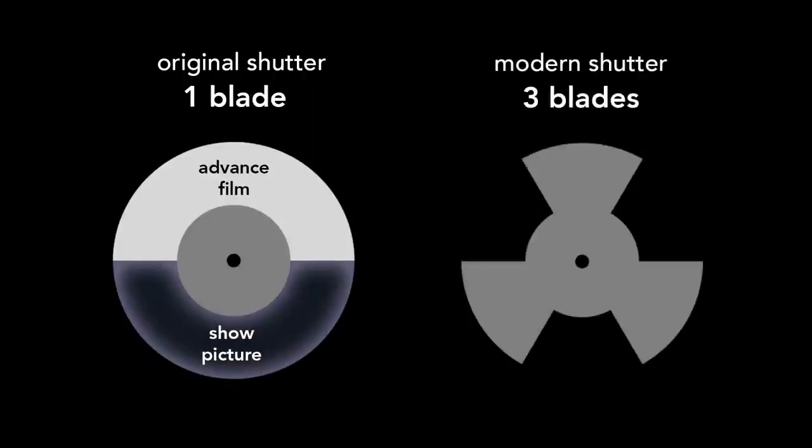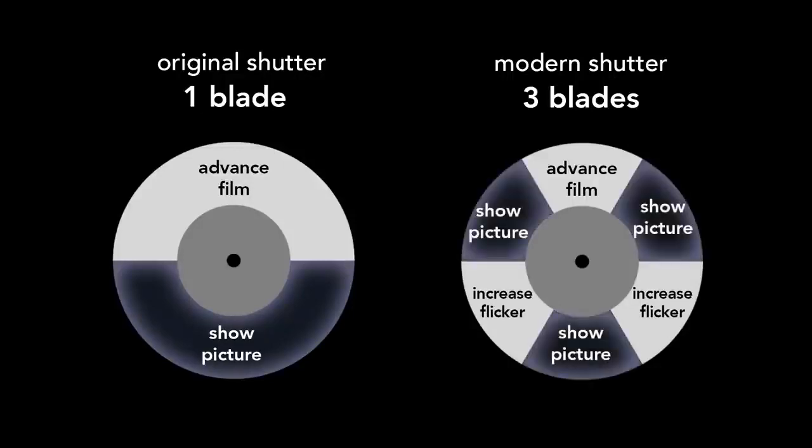Originally shutters had a single blade that covered the advancement of the film with an open section that showed the picture. Modern shutters have three blades. The first blade covers the film motion. The second two blades block the light even when the film is stationary. They only serve to increase the flicker rate. The three openings allow the image to be projected half the time.